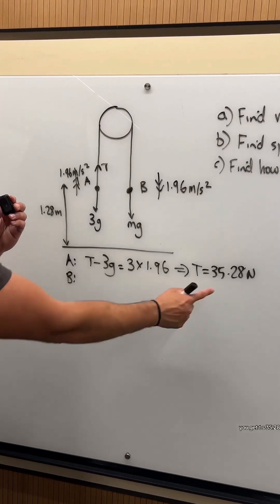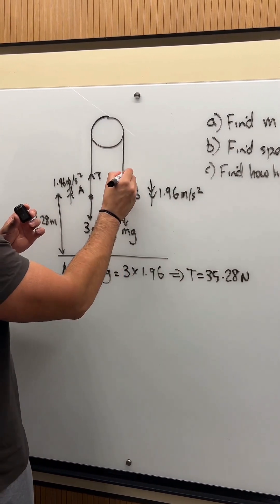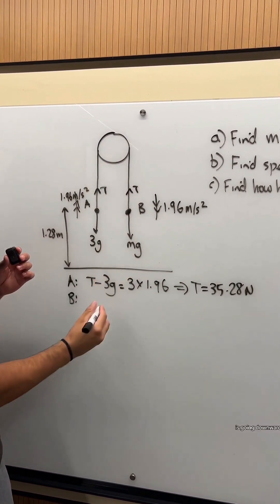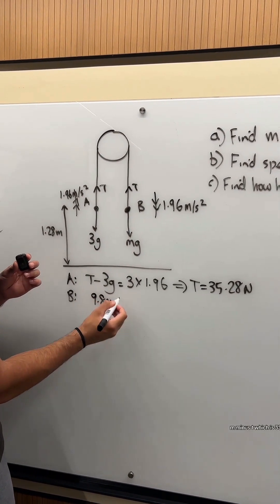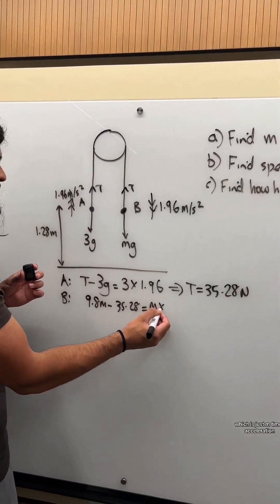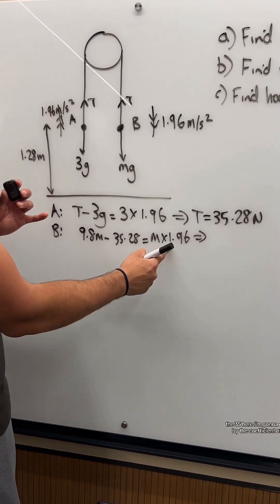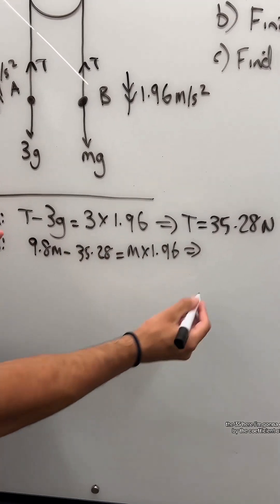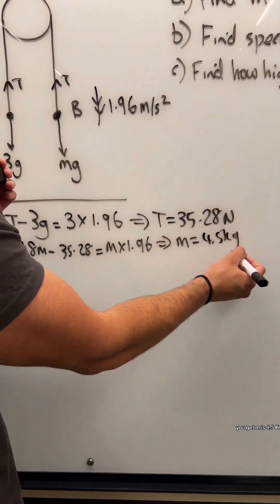You get T is 35.28. We don't need to round just yet, only at the end of part A. Now for part B, it's going downwards. So we're going to say Mg minus T. I'm going to say 9.8M minus T, which is 35.28, equals the mass M times acceleration. I'm going to bring the 35 here, divide by the coefficient of M, and you get M is 4.5 kg.